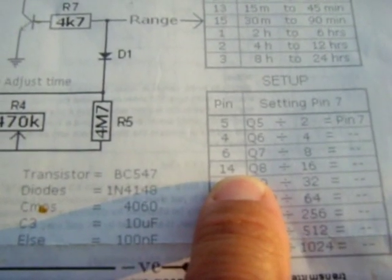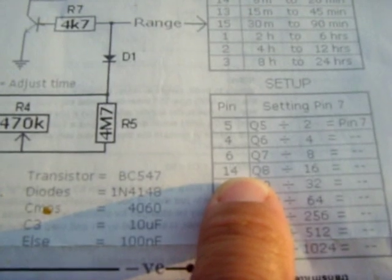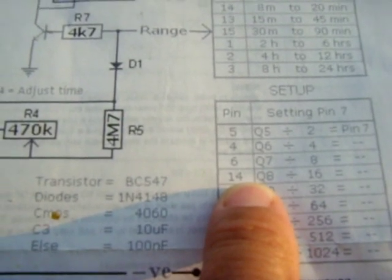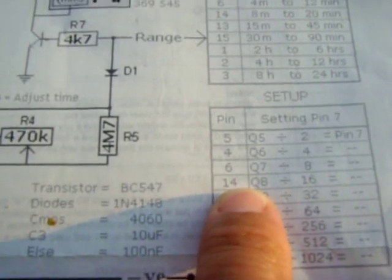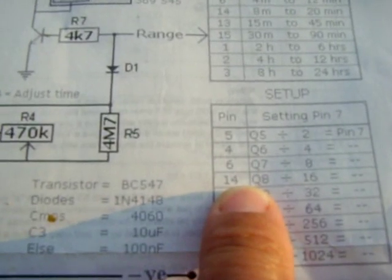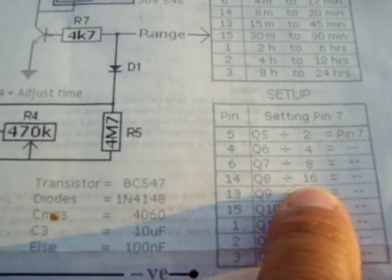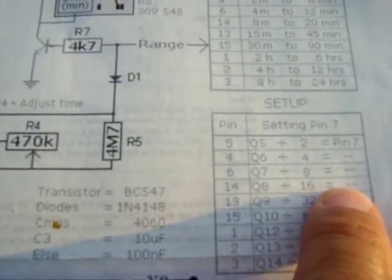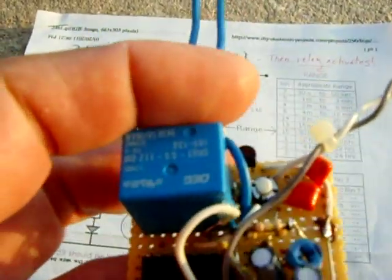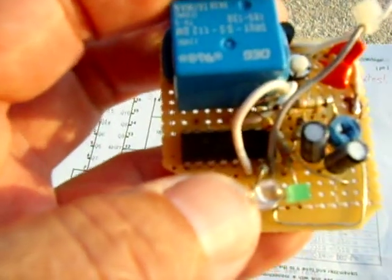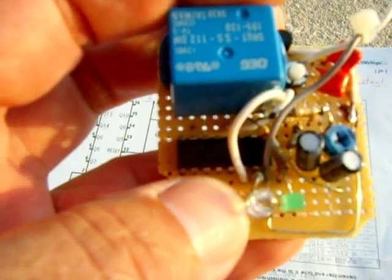So you're going to use 10 minutes, which is 600 seconds. You get 600 seconds divided by 16, and that's how many seconds it should take for this light right here to illuminate once the circuit comes on.